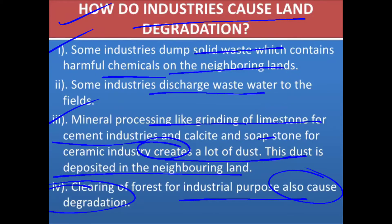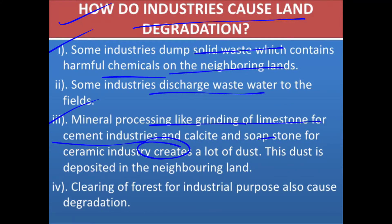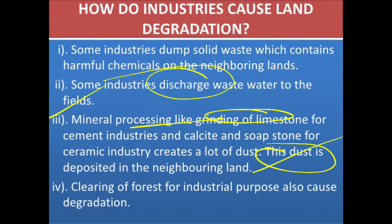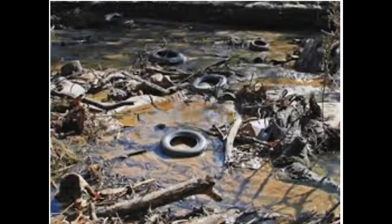How do industries cause land degradation? By releasing harmful waste and discharging poisonous water, which is not good for the health of the land. Mineral processing like grinding deposits material on neighboring land, making it unfit for cultivation. Clearing forests by industry is also a major cause of land degradation.